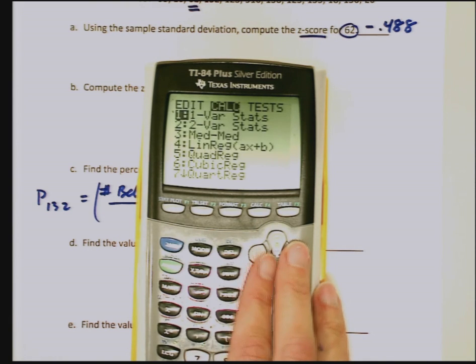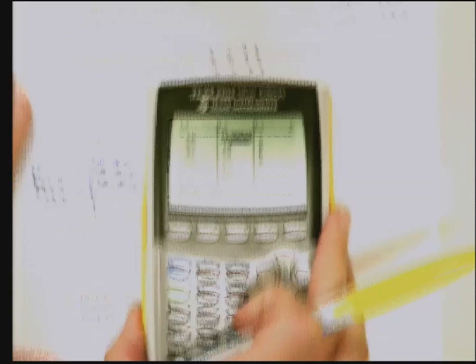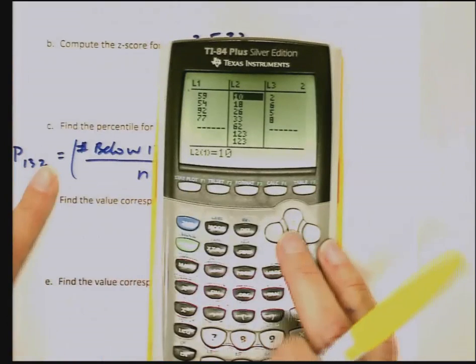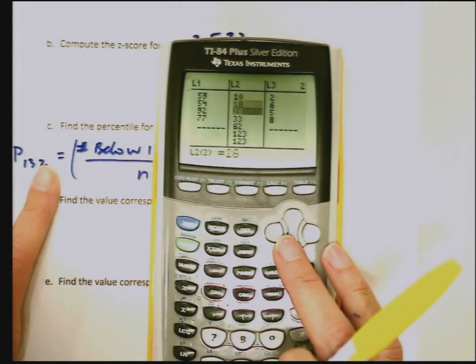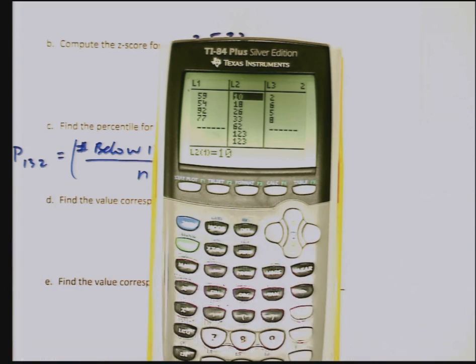Now let's check my list. Stat, edit. Now I'm in order. So I'm going to find how many scores are below 132. 1, 2, 3, 4, 5, 6, 7. So I've got 7 scores below.